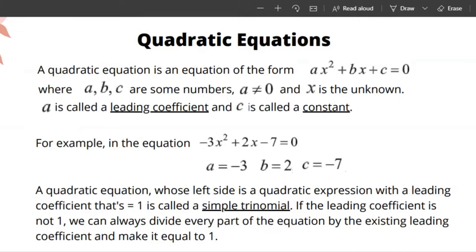A quadratic equation whose left side is a quadratic expression with a leading coefficient that's 1 is called a simple trinomial. If the leading coefficient is not 1, we can always divide every part of the equation by the existing leading coefficient and try to reduce it to a simple trinomial.